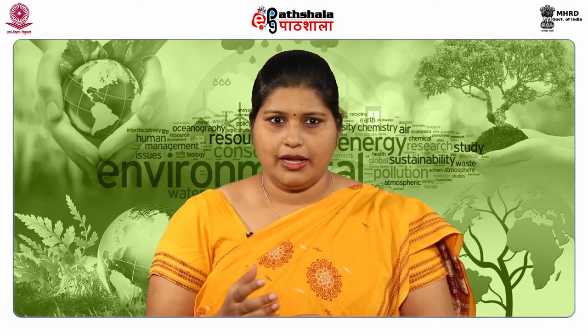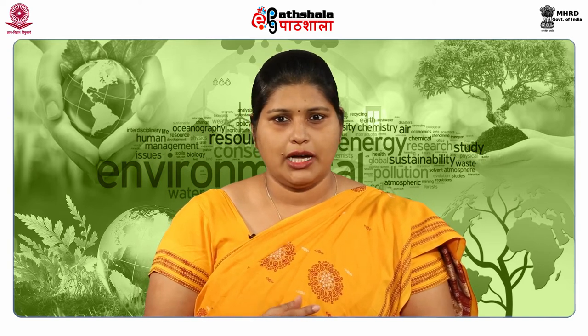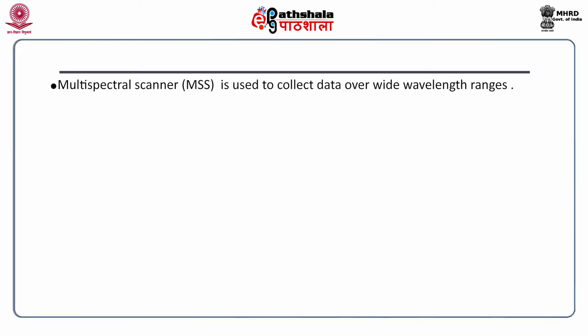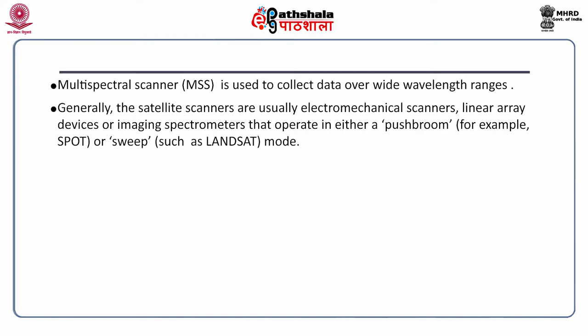Aircraft and satellite platforms are used as scanning systems in remote sensing. Multispectral scanners, popularly called MSS, are used to collect data over wide wavelength ranges. Satellite scanners are usually electro-mechanical scanners, linear array devices, or imaging spectrometers that operate either in a push broom mode — for example, the SPOT satellite — or sweep mode such as the Landsat mode.